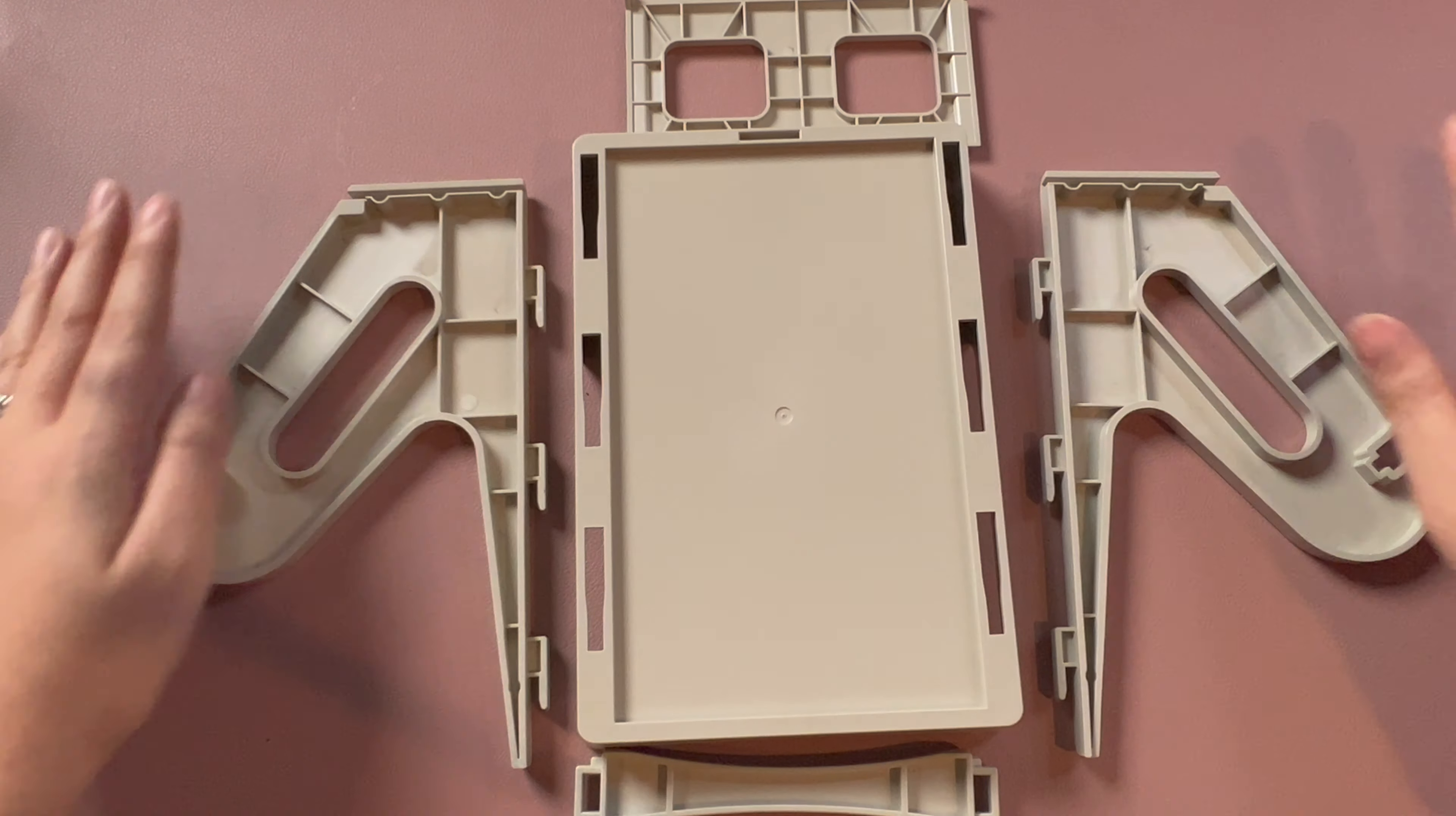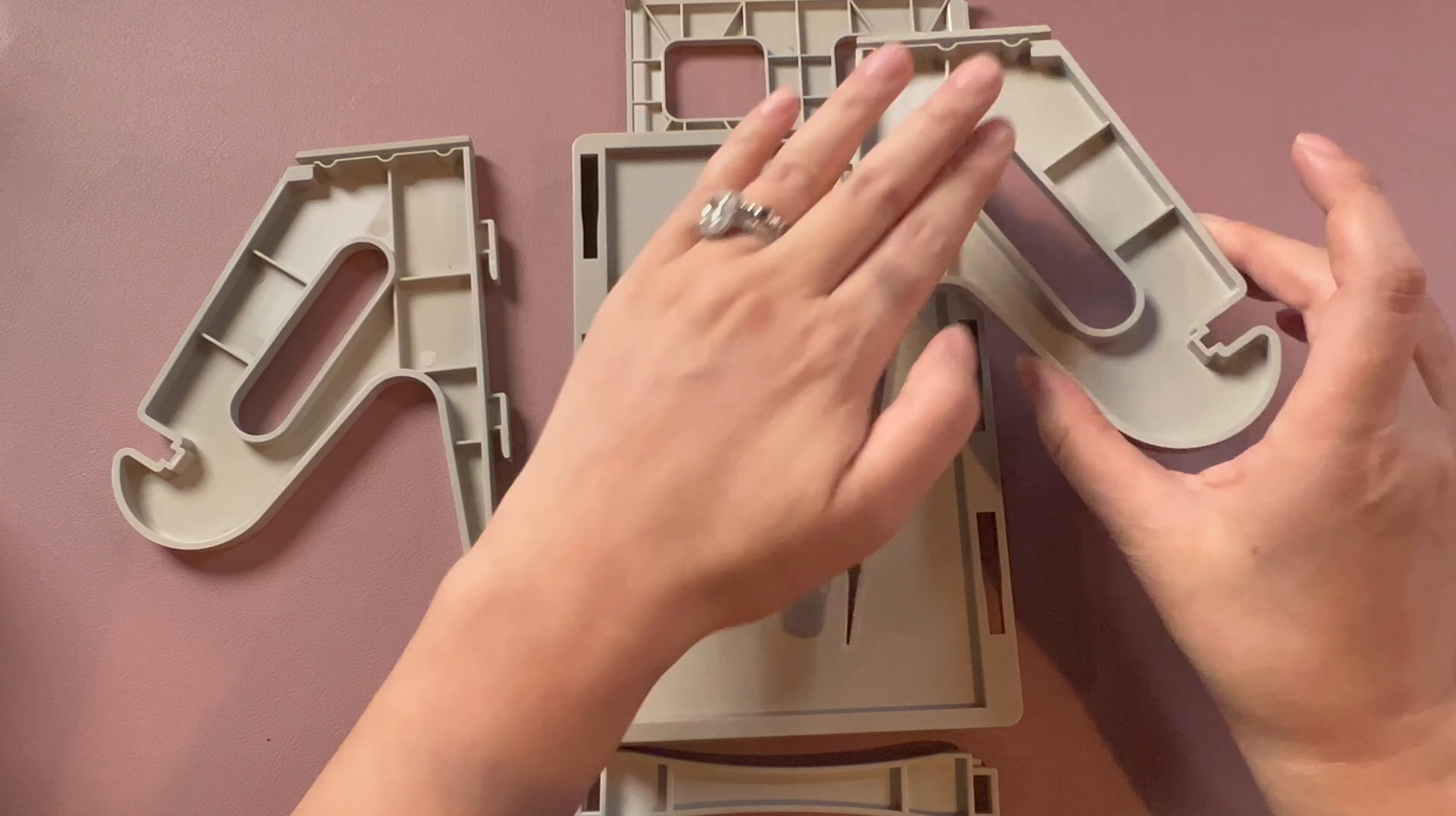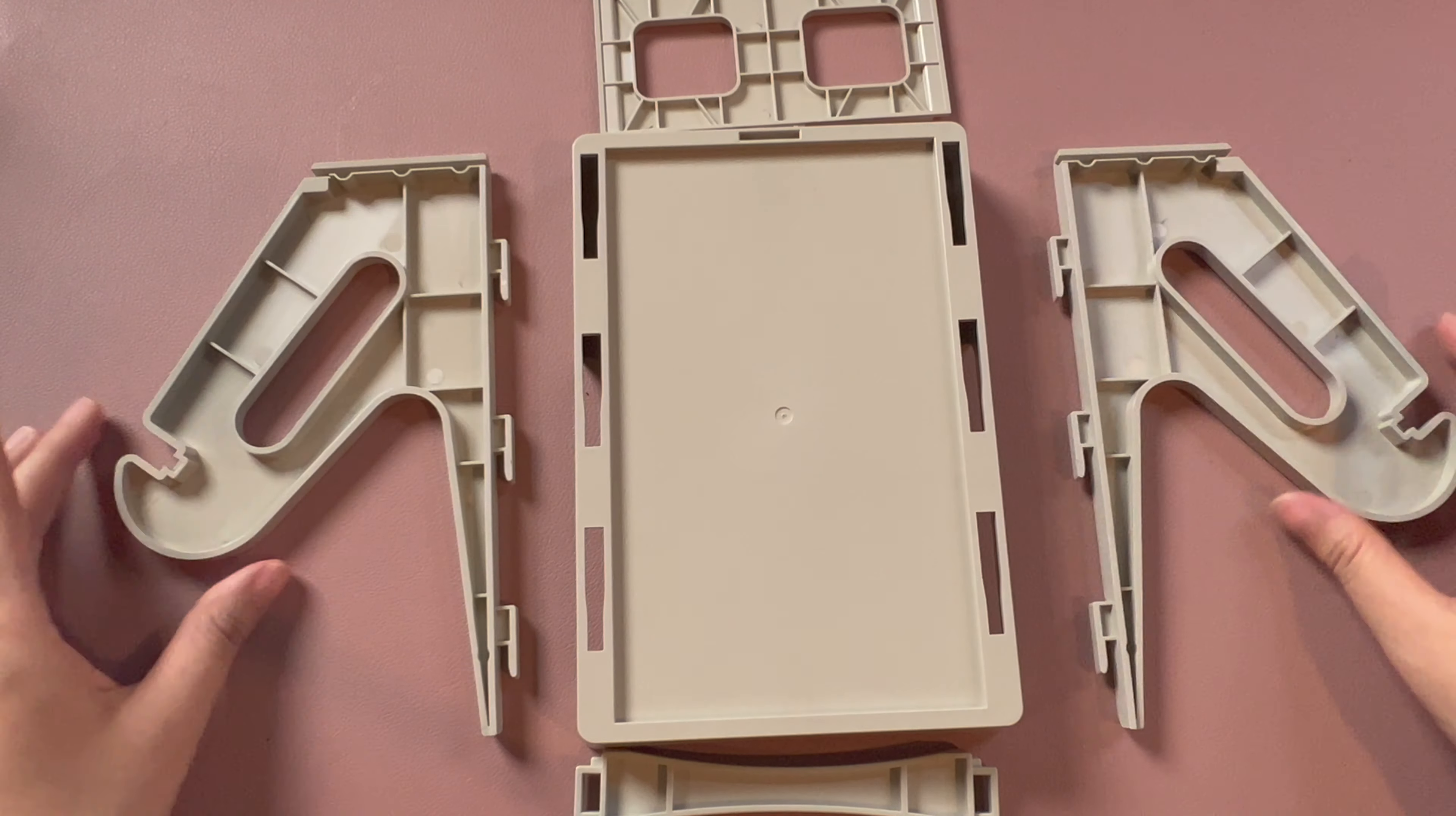So you should have your pieces laid out like this, your little hooks facing downwards with the outside. There's the pretty side and then there's the inside side. So you're going to have the pretty side down and it's going to look like this, like a little person saying hello.